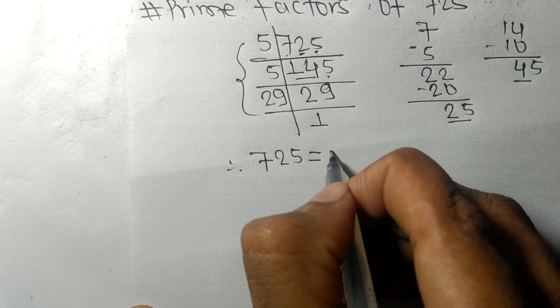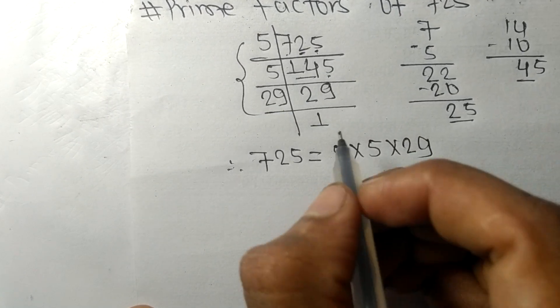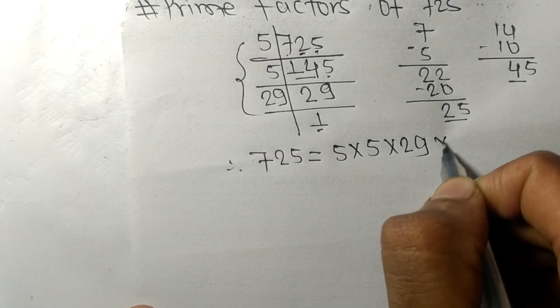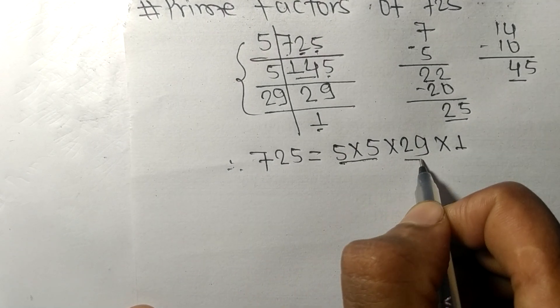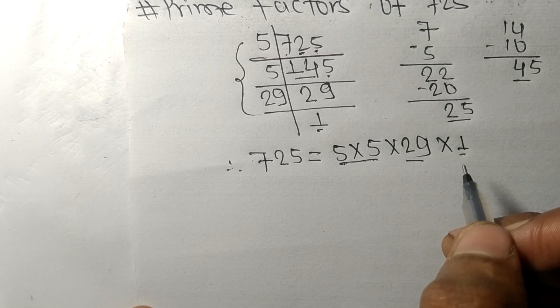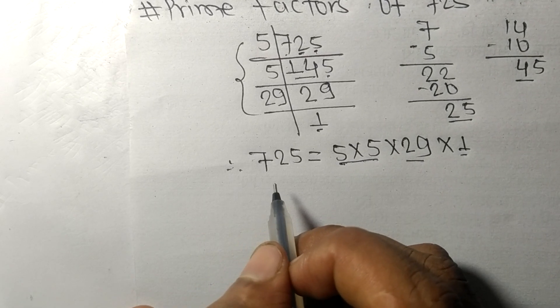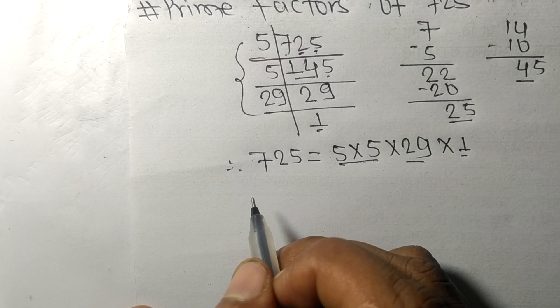Therefore, 725 is equal to 5 times 5 times 29 times 1. So 5, 29, and 1 are the prime factors of 725. So this much for today and thanks for watching.